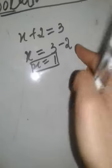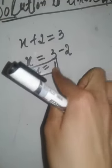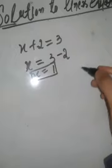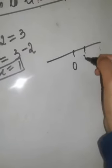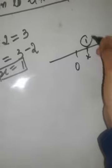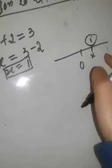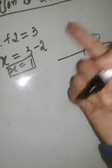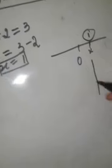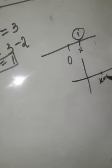I have already told you in a previous lecture that a linear equation in one variable has only one solution, and this solution can be represented on a number line. You can also represent it in a coordinate system: x equals 1 can be written as the point (1, 0), where x is 1 and y is 0.